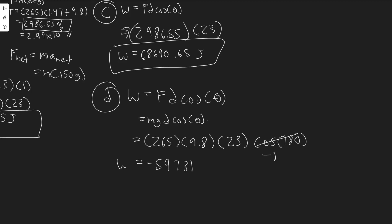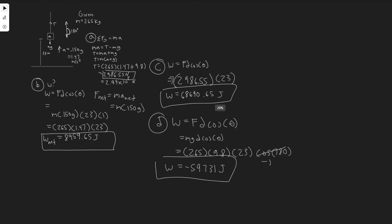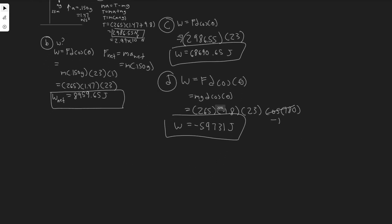So the work done by gravity is negative 59,731 joules. That's your answer to D. Let's move on to the last part, E.